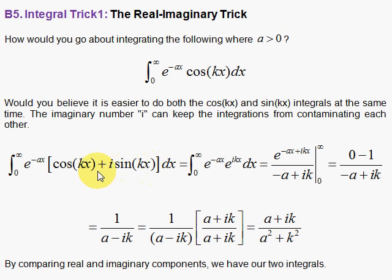So let's do this using the Euler formula. We can replace the cosine kx and i sine kx with the e to the i kx.